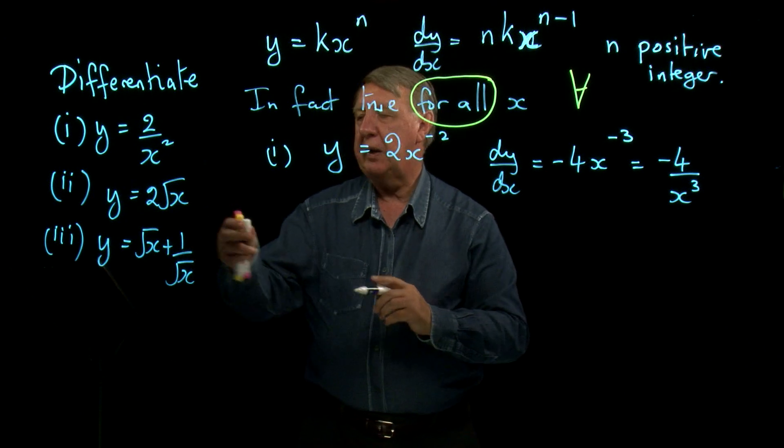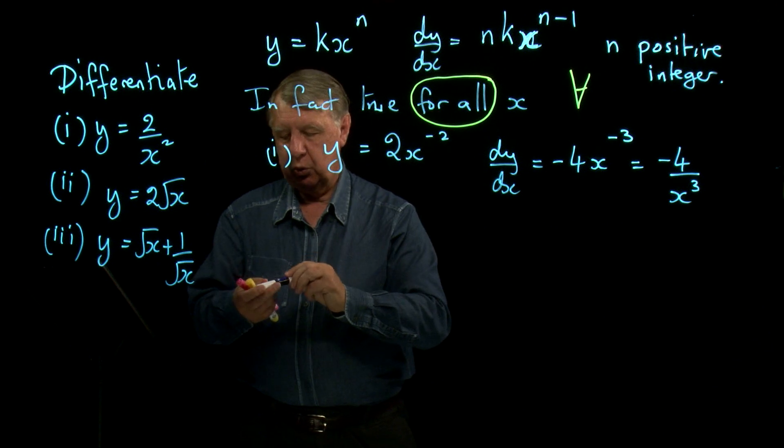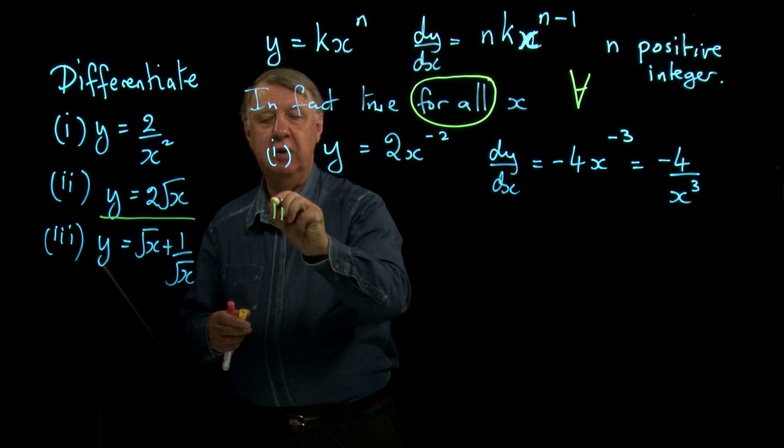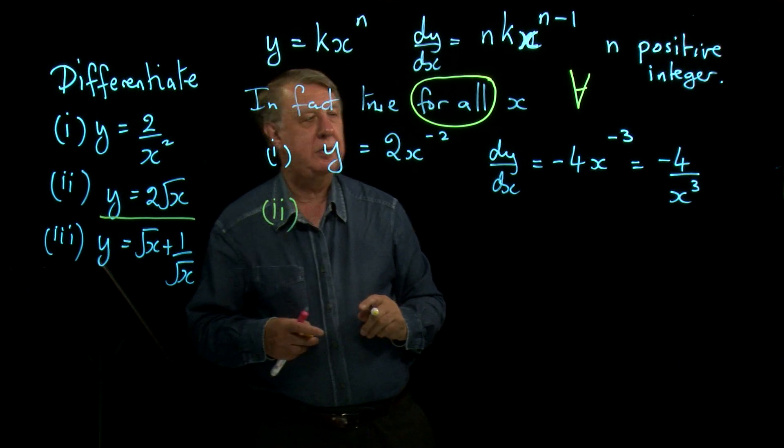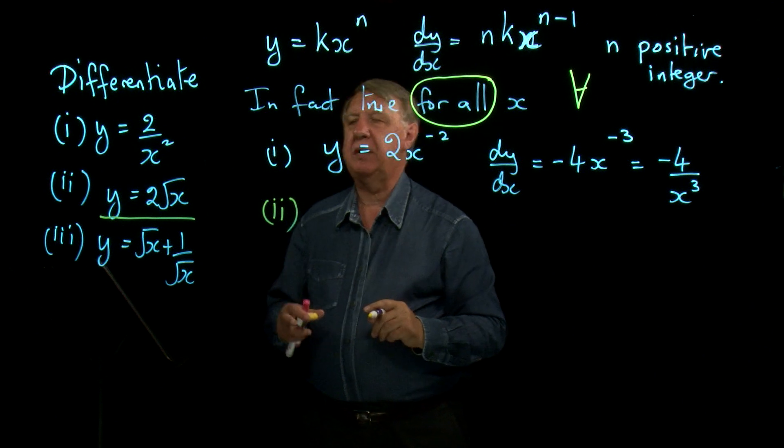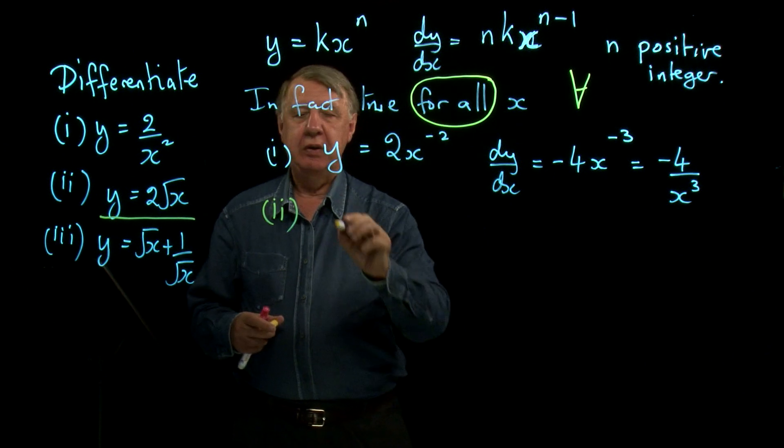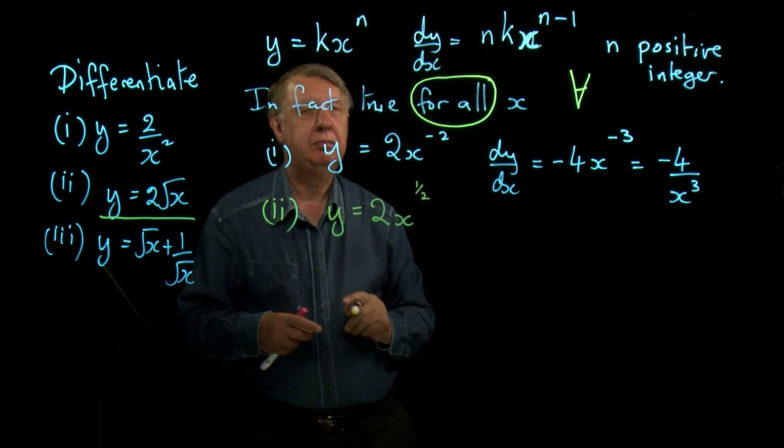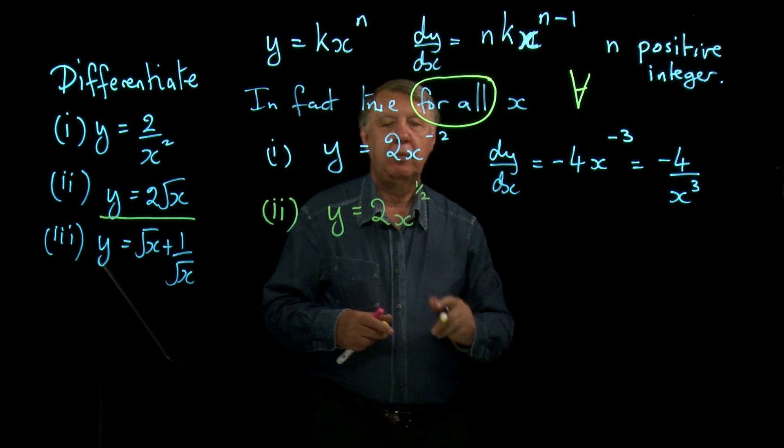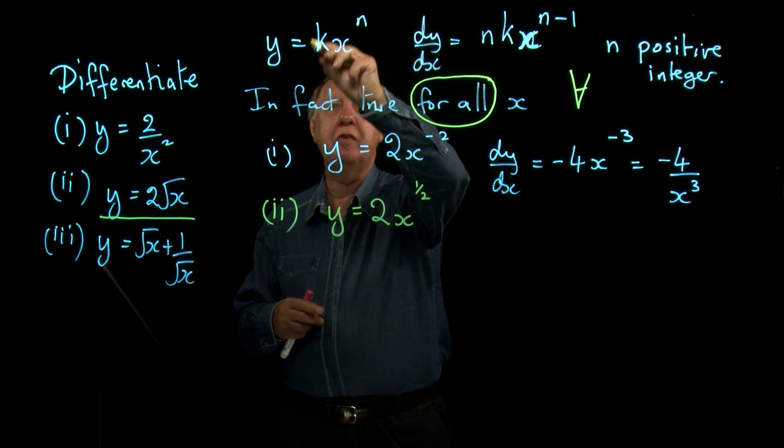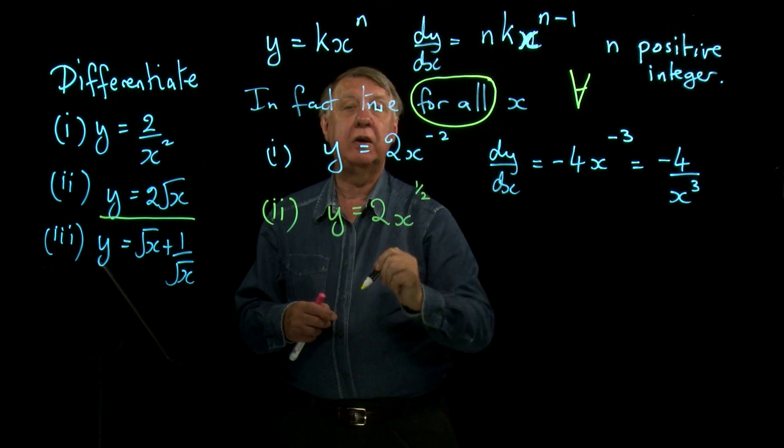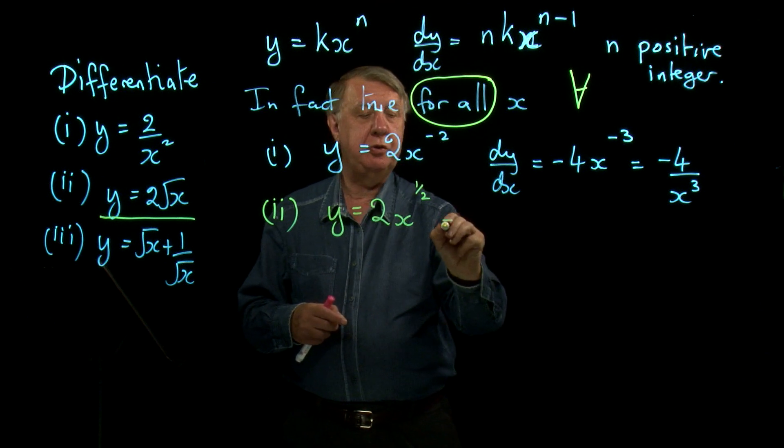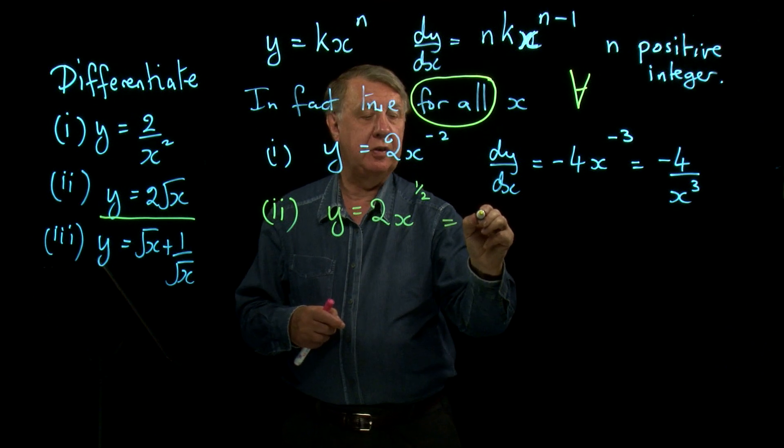The second one. Okay, let's call this the yellow equation so we can color code this. Now the square root of x, you should have remembered, is of course x to the power 1 half. Now it's in the correct form to use the formula. The power is a half. Bring down a half. Multiply it by the number in front, 2. 2 times a half is, of course, 1.